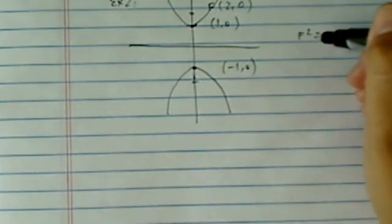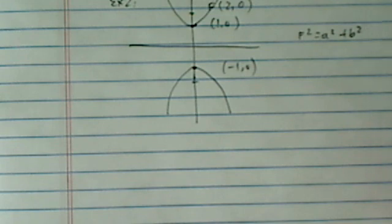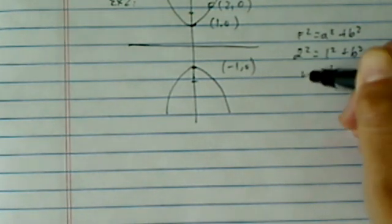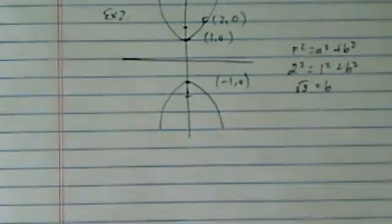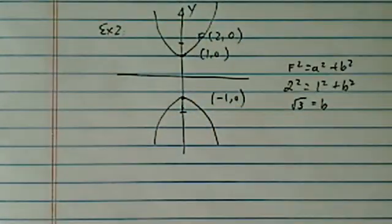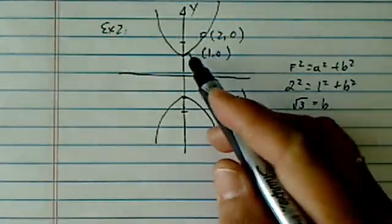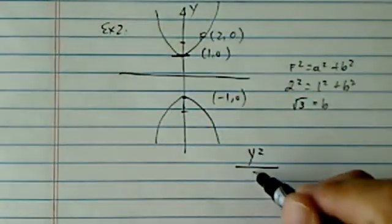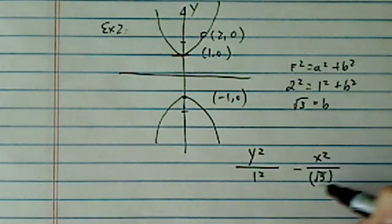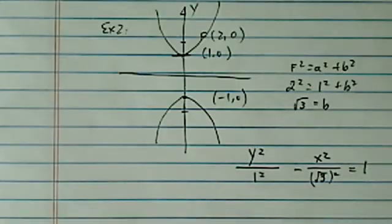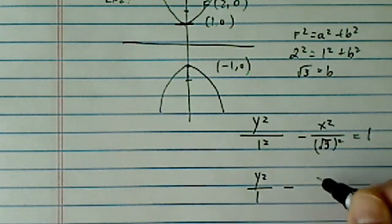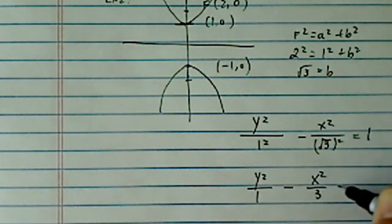So from here we have F squared equal to A squared plus B squared, F is 2 squared, 1 squared plus B squared, and then B is radical 3. So once you find that, everything else follows pretty easily. This is the Y axis, so we have Y squared over A, which is 1 squared, minus X squared over radical 3, the whole thing squared, equal to 1. So let's clean it up one more step, Y squared over 1 minus X squared over 3 equal to 1.